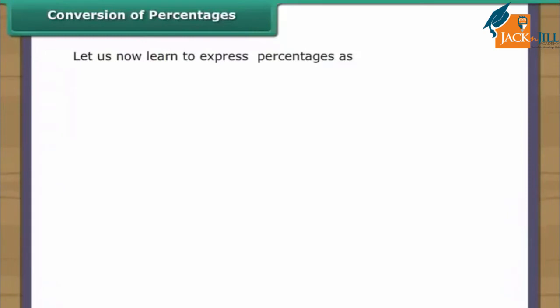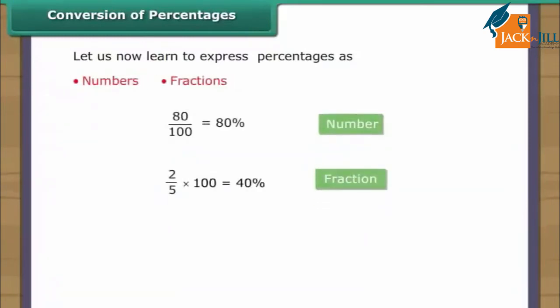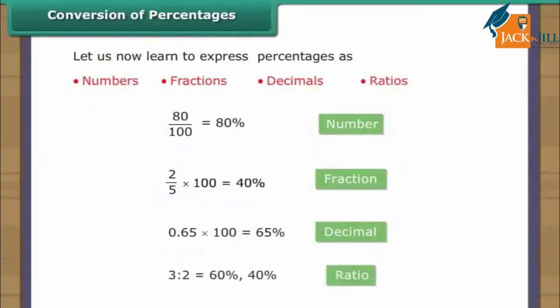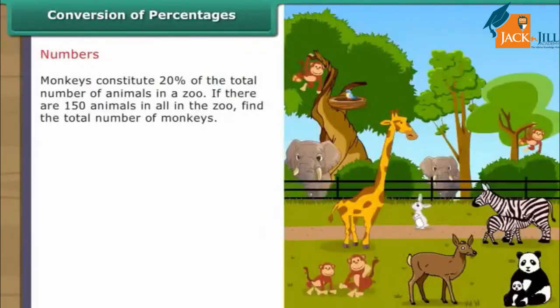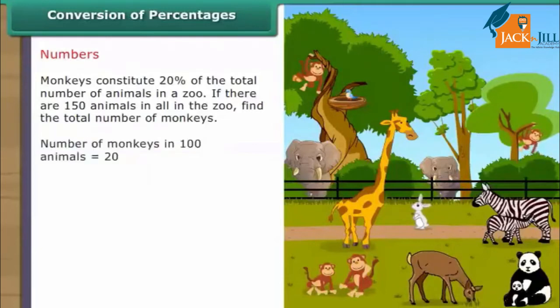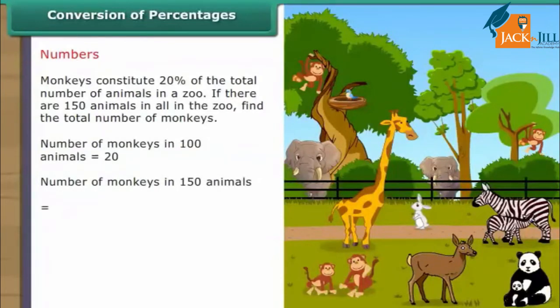Conversion of percentages. We can now express numbers, fractions, decimals, and ratios as percentages. Let us now learn to express percentages as numbers, fractions, decimals, and ratios. Numbers: Monkeys constitute 20% of the total number of animals in a zoo. If there are 150 animals in all, number of monkeys in 100 animals is 20; in 150 animals = 20/100 × 150 = 30. There are 30 monkeys in the zoo.